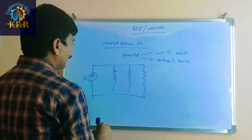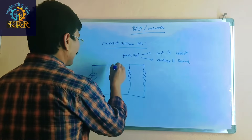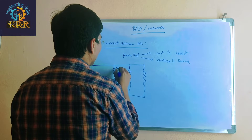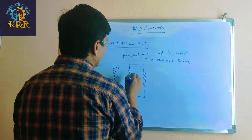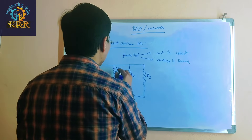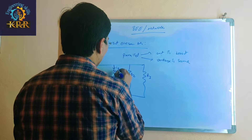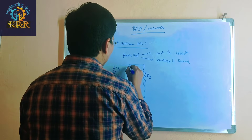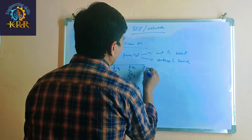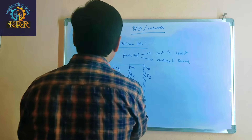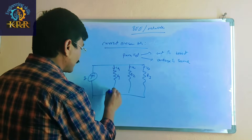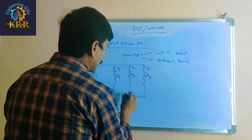This is the total current. This current is called IR1, flowing through resistance R1. This current is called IR2, and this current is called IR3. The total current is equal to IR1 plus IR2 plus IR3.